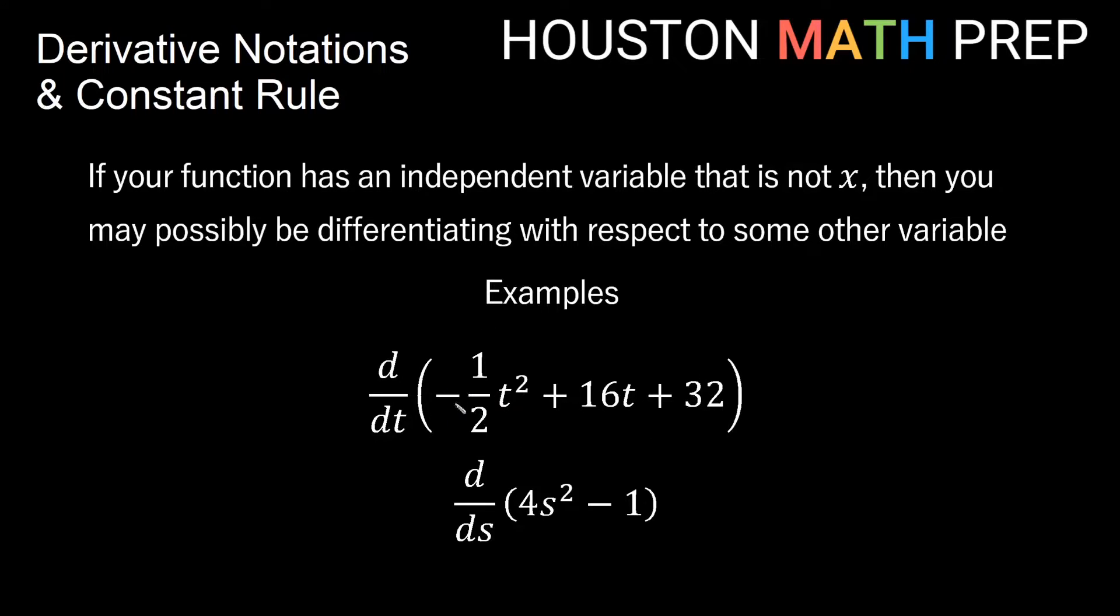Here we have an expression negative one half t squared plus 16t plus 32 which is clearly not using x as a variable. So if we're trying to find the derivative of this expression, of this function, then we would take the derivative with respect to t. So this d/dt says derivative with respect to t of this expression.